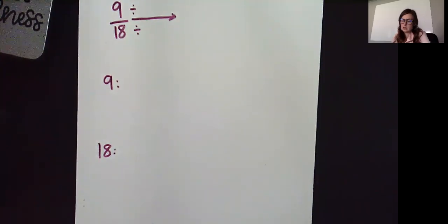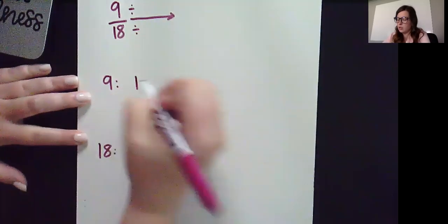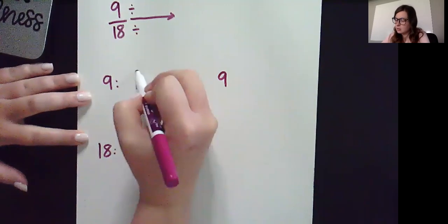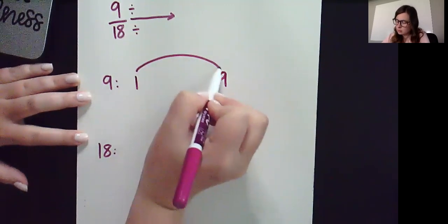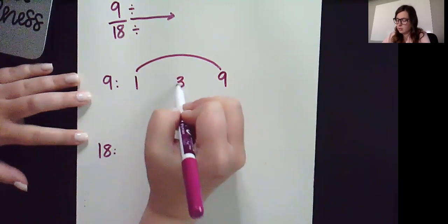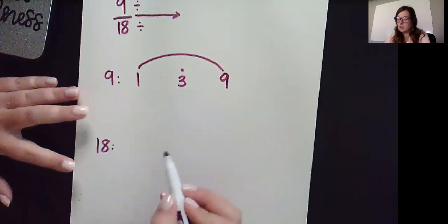Simplifying 9/18. To make 9, we can do 1 times 9 and then 3 times itself. That's how I do that one.